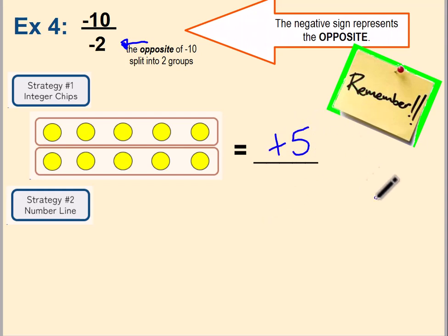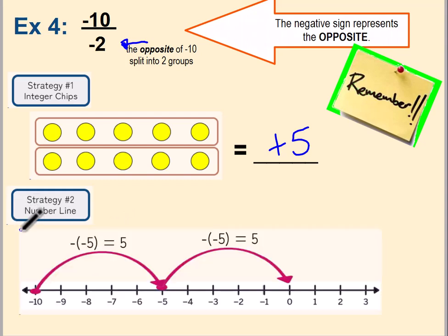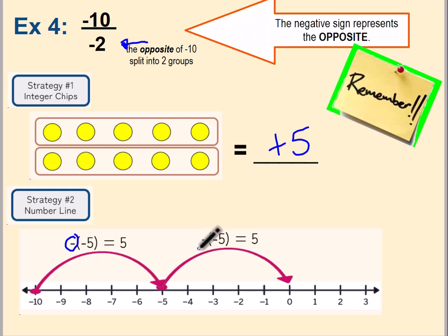Each group has positive five — or just five. On the number line, you still have two equal jumps of negative five, but we want the opposite of negative five, which is positive five. So each jump represents positive five, which is the answer we got with the chips — positive five. And that's all there is to modeling multiplying and dividing integers. Good job, Bobcats!